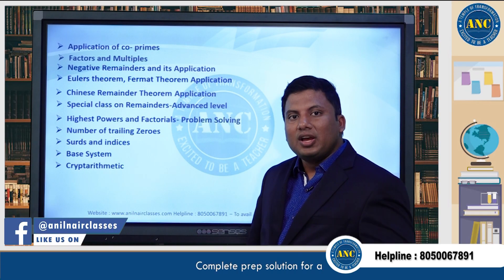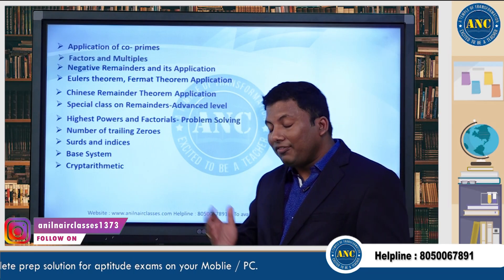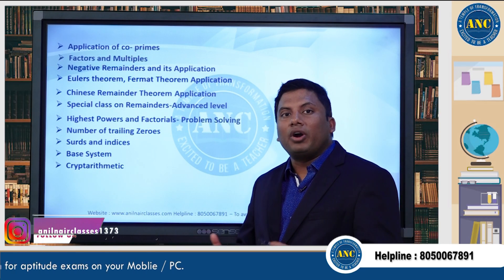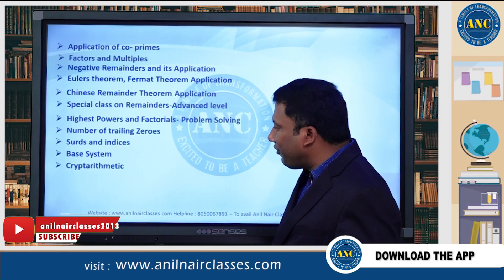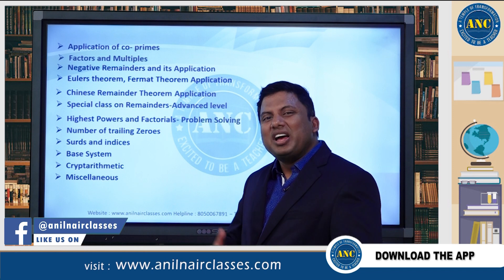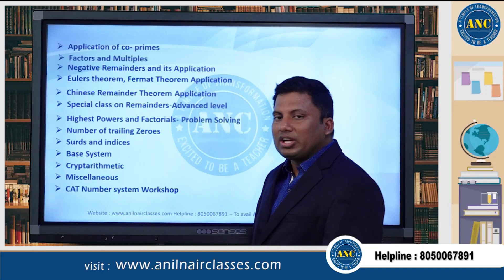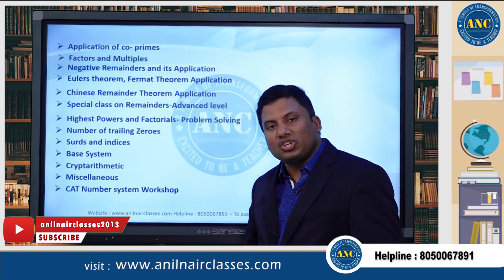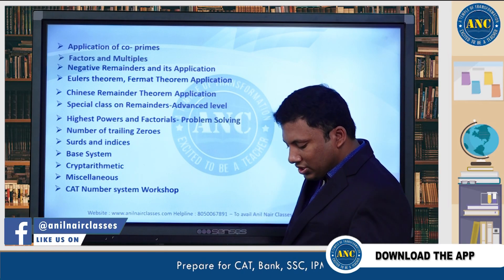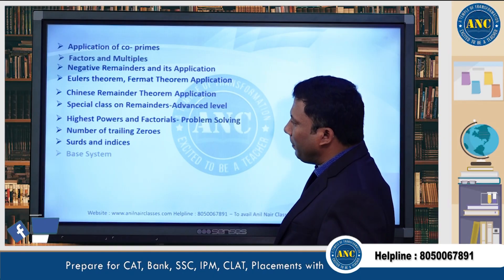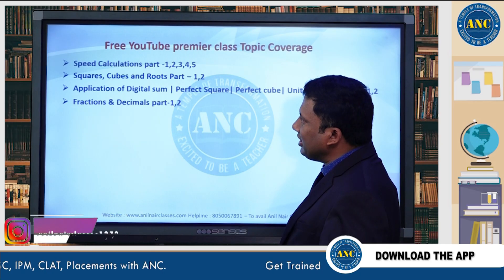Then comes cryptarithmetic — what if alphabets are given, how to determine the numerical values, when alphabets are added, subtracted, or squared, decoding alphabets into numerical values. In some textbooks it is also called alphanumeric values. We will also discuss digit-based questions and miscellaneous questions. Last comes the CAT number system workshop — the final session containing very high-level number system questions. From basics to intermediate to advanced, everything is covered.